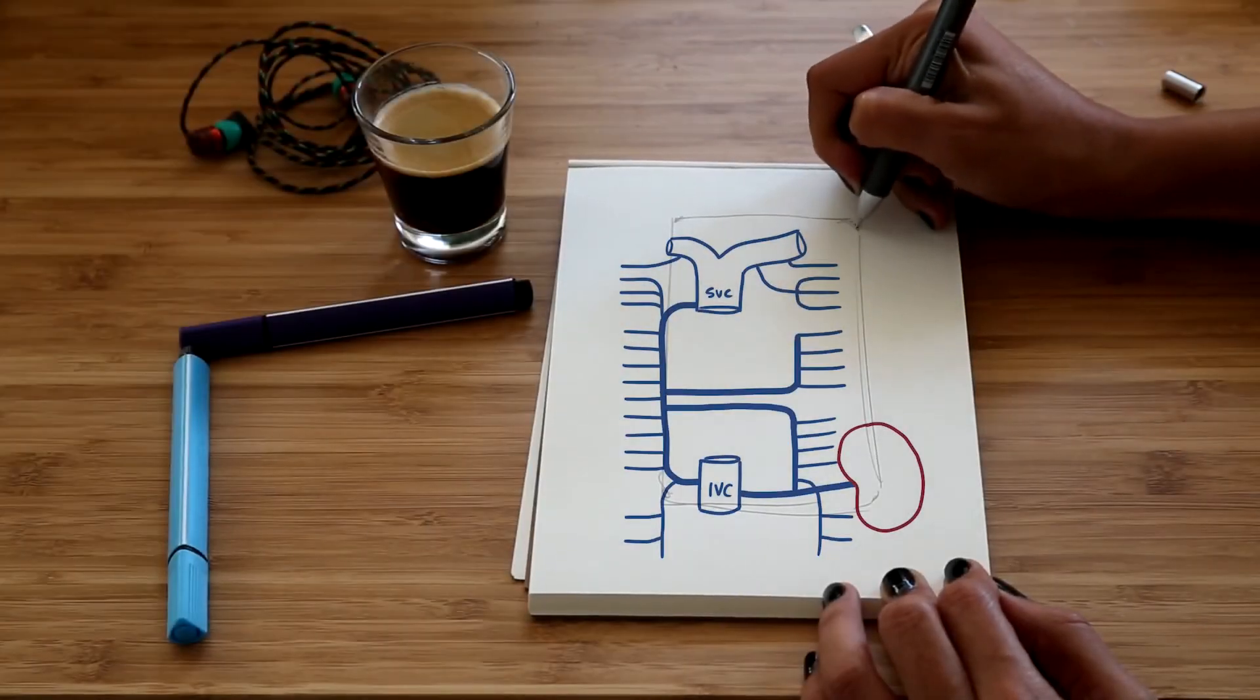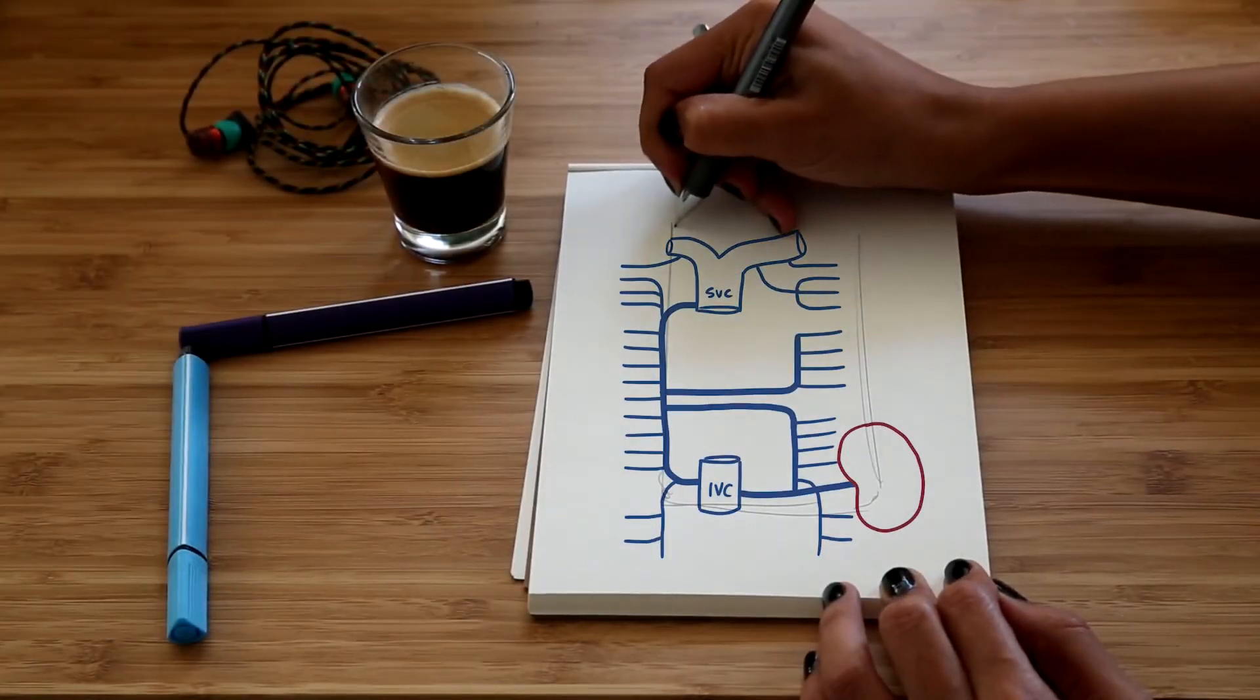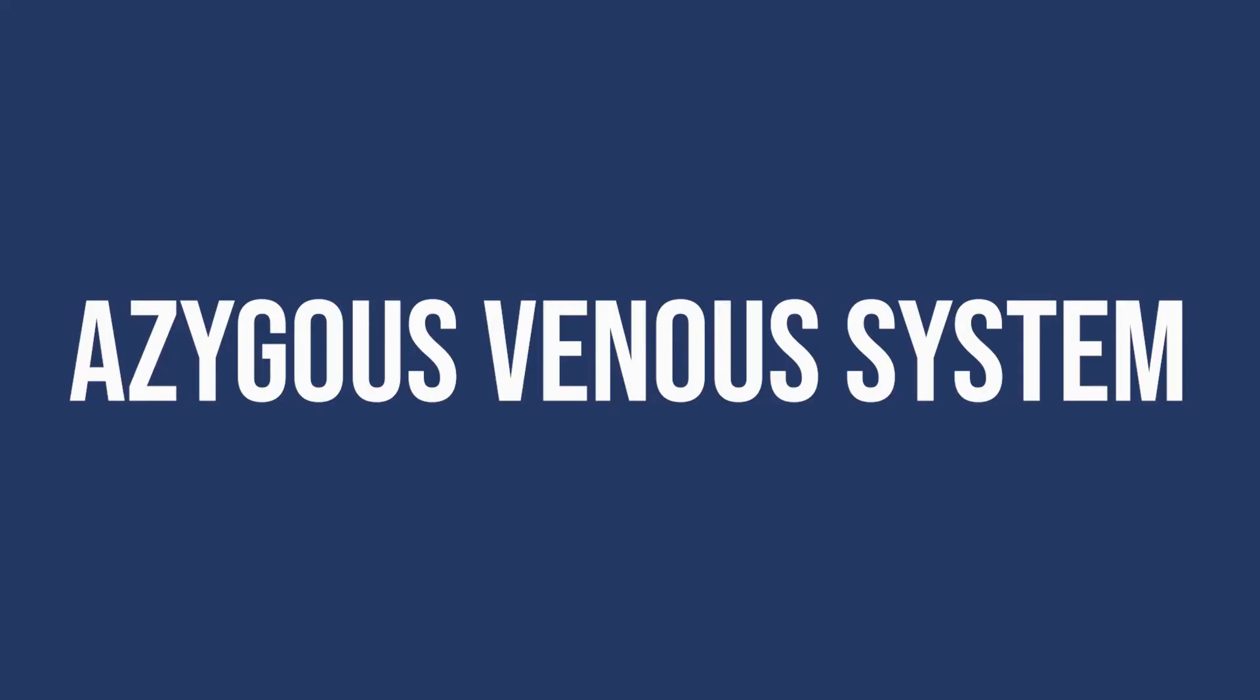In this video I'll be doing a quick drawing of the veins in the posterior mediastinum, otherwise known as the azygos venous system.